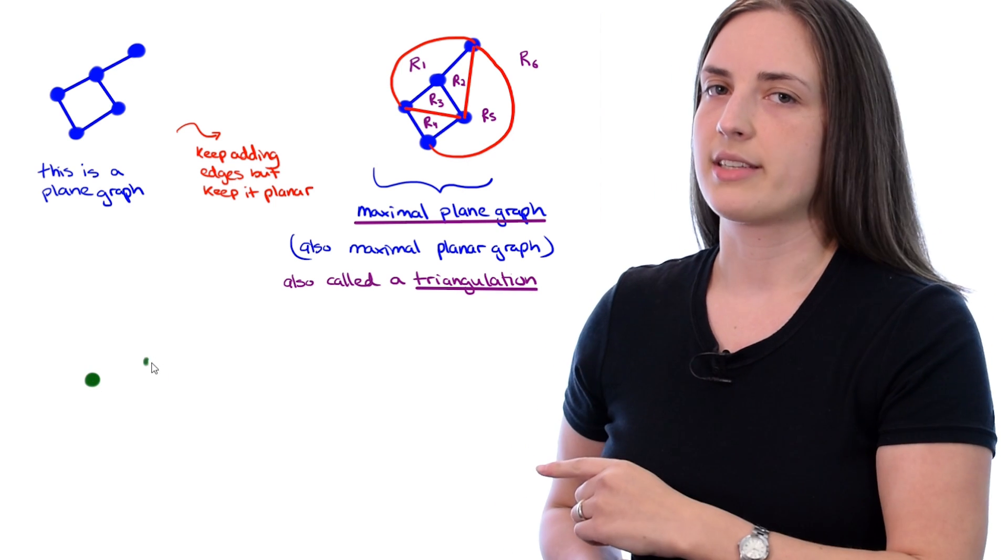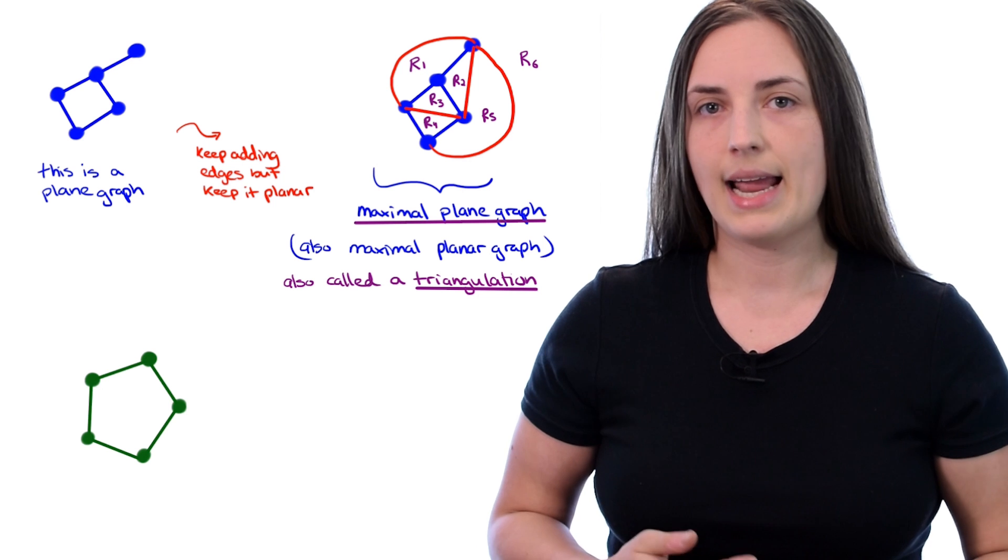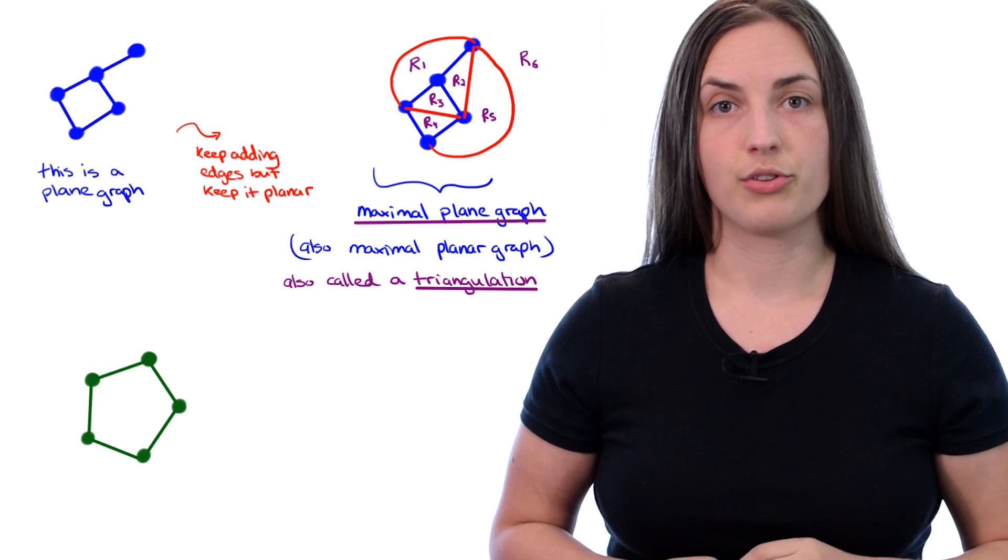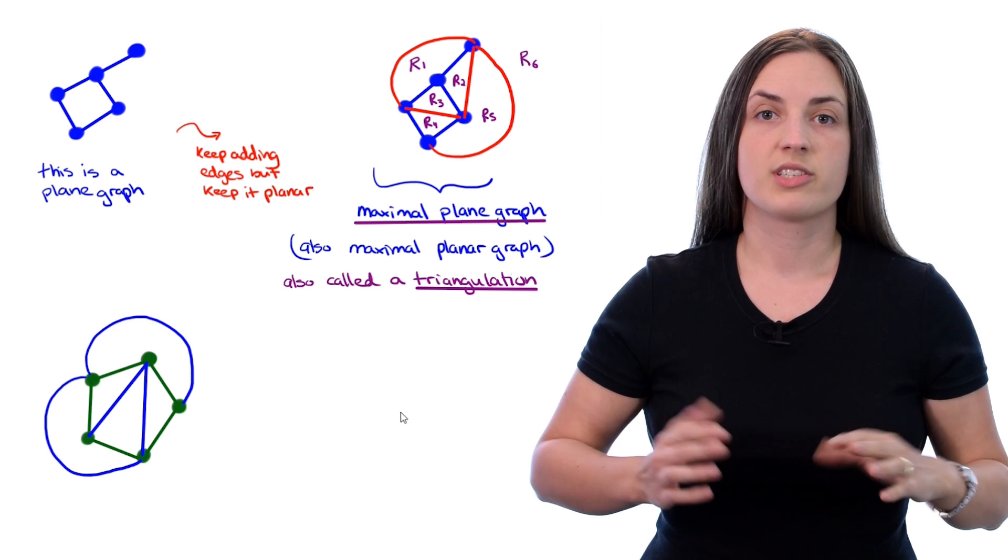Here is another example. We'll start with this green plane graph, and then we'll add edges until we get a new graph, which is a triangulation of the old graph. So, for example, we can add in these blue edges, and now we're stuck.